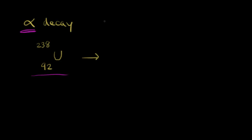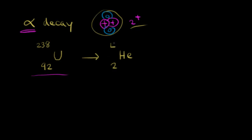We saw the helium nucleus in the previous video. There are two protons and two neutrons in the helium nucleus. Since there are two protons, the charge of an alpha particle is 2+. For representing an alpha particle in our nuclear equation, since it has the same composition as a helium nucleus, we put He, with a 2 below and a 4 above — two positive charges and four nucleons total.